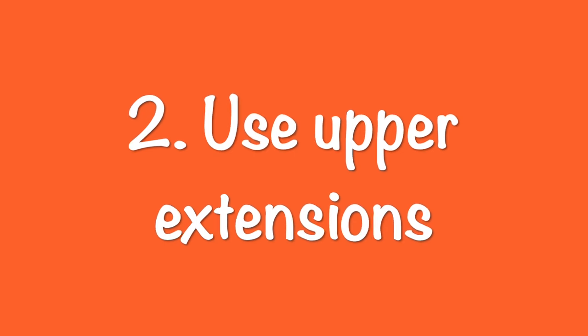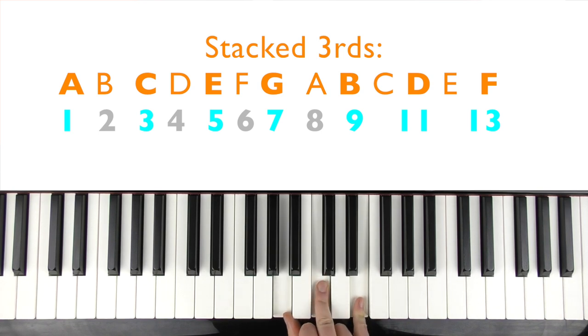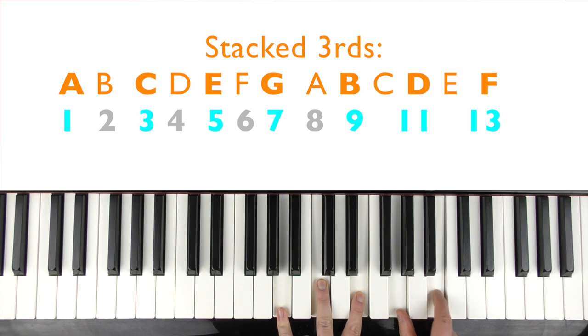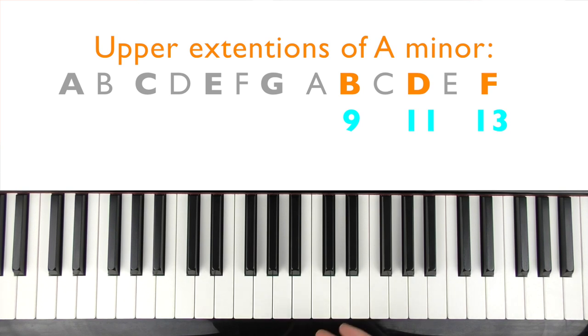So the next thing we're going to do is add what's called some upper extensions to those chords. So basically, an upper extension means adding things such as ninths, elevenths, and thirteenths. Technically sevenths in there as well, stacked in thirds. For example, A minor is first, third, fifth note of the scale of A minor. If we go up a third, that gives you the seventh. Go up a third again, that gives you the ninth. If you go up a third again, that gives you the eleventh. If you go up a third again, that gives you a thirteenth. So playing around with ninths, elevenths, and thirteenths, which means it's the top notes of those chords, is going to start adding more color and interest.